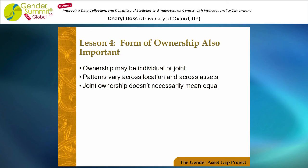Lesson four: the form of ownership is also important. Ownership may be individual or joint, and the patterns vary both across location and across assets. Within any of the countries, if we look across the assets, we see quite different patterns of the form of ownership, as well as some significant patterns generally across the three countries. One important point from our work and other work is that joint ownership doesn't necessarily mean equal — even if husbands and wives say they own something jointly, they don't report having the same rights over the asset.